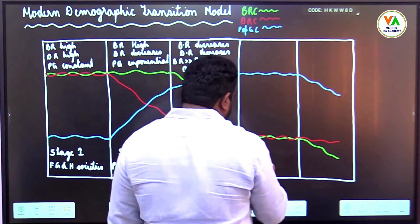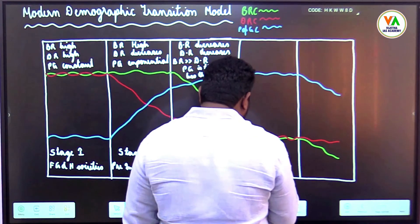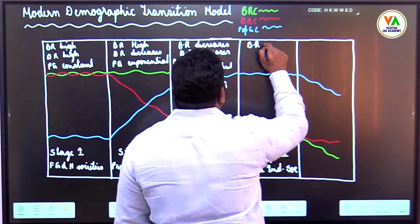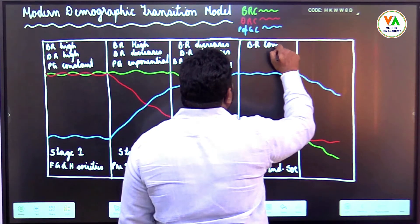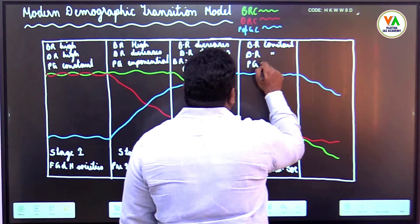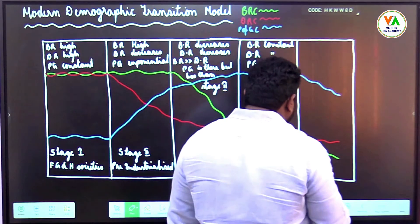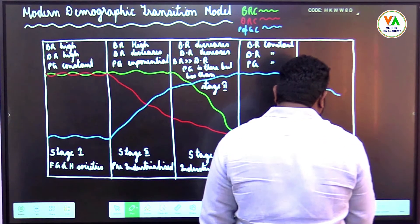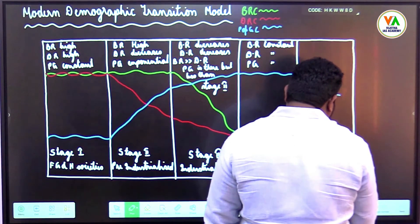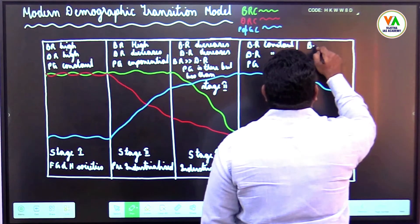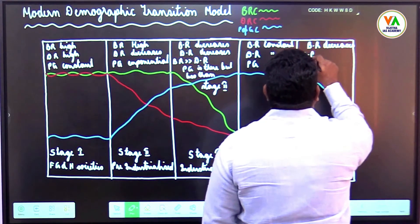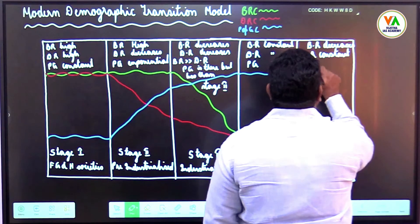Stage 4 is a feature of mature industrialized societies. Birth rate constant at low, death rate also constant at low, population growth constant. Stage 5 is like countries such as Japan, Italy, Costa Rica, etc. Birth rate decreases, death rate constant, population growth declines.